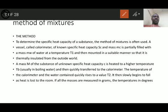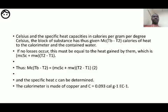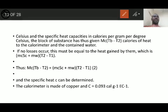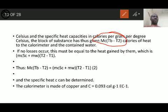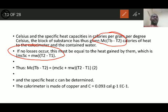If all masses are measured in grams, temperatures in degrees Celsius, and specific heat capacity in calories per gram per degree Celsius, the block of substance has given calories of heat to the calorimeter and contained water. If no heat loss occurred, this heat loss by the substance must equal the heat gained by the calorimeter and water.